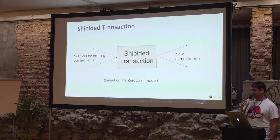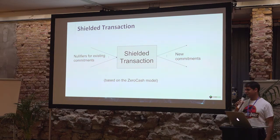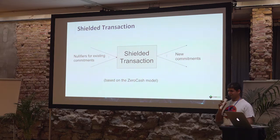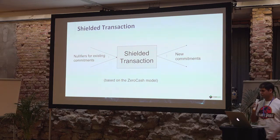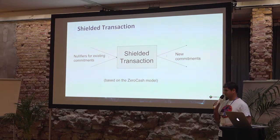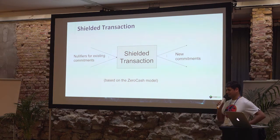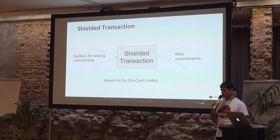All the commitments are stored in one Merkle root. In order to prove that you have value, you should prove that you control — that you know — a Merkle path from some root in the past to the commitment that you want to use. And you need to also prove that you know the secret key that fits the private key behind this commitment.